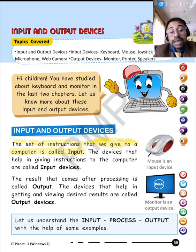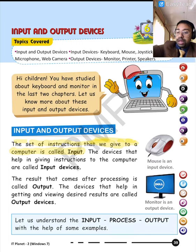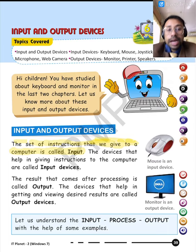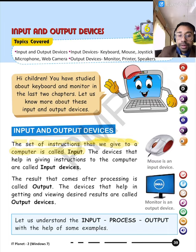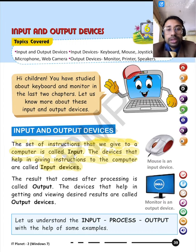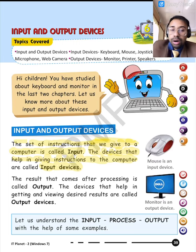Now, there are certain devices — as you can see, I am having a keyboard here. So this device, as you all know, is a keyboard. A keyboard is a device that helps us to enter data. A device that helps us to enter data is called an input device. So the devices that help in giving instructions to the computer are called input devices.